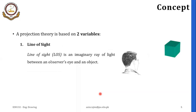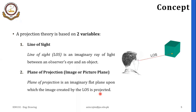As I told you before, the projection theory is based on two variables. The first one is the line of sight, and the second one is the plane of projection. The line of sight is basically the imaginary ray of light between an observer's eye and the object. The plane of projection, or POP, is basically the imaginary flat plane upon which the image is created — the line of sight is projected onto it. Here I have an object and an observer through which I am seeing the line of sight.